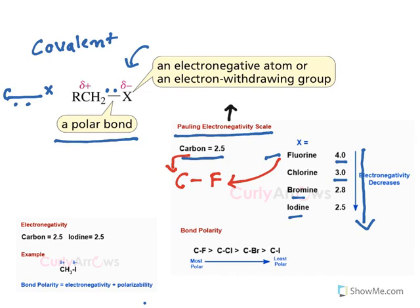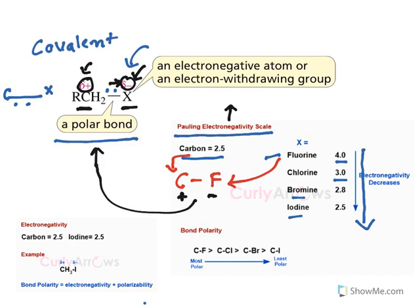Electronegativity is the ability to attract electrons towards itself. So electrons are pulled towards halogen. Since electrons carry a negative charge, halogen gets a partial negative charge and carbon gets a partial positive charge. This acquisition of two different poles — a negative pole and a positive pole — is called polarity, hence it is called a polar bond. One more important thing: electronegativity of carbon and iodine are both 2.5, but electrons are still pulled towards iodine.